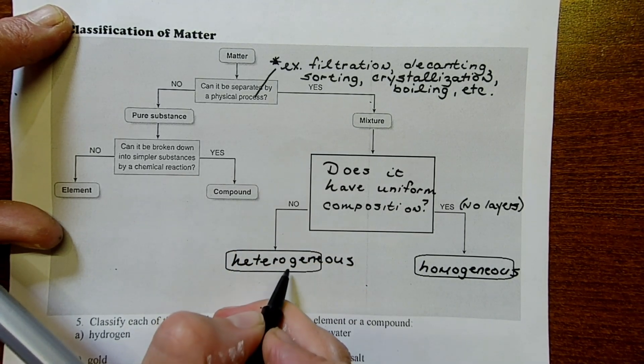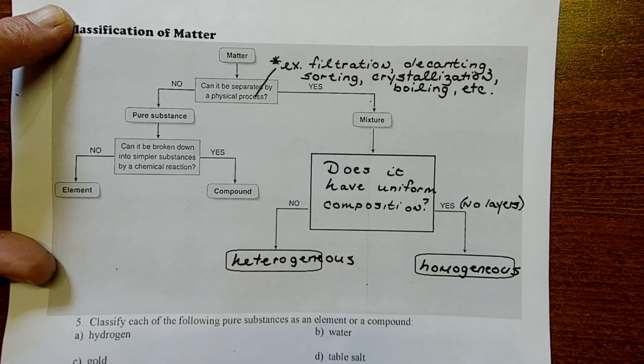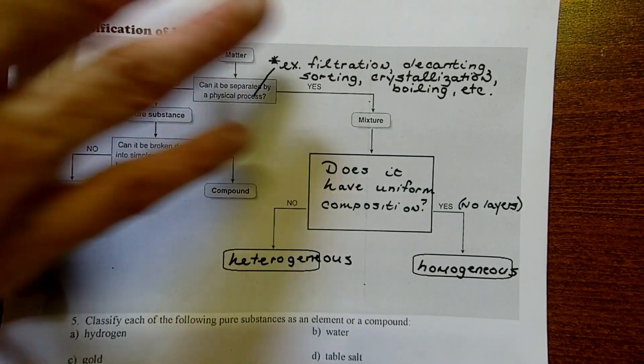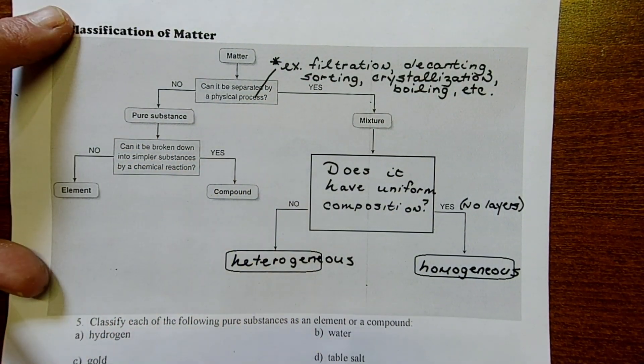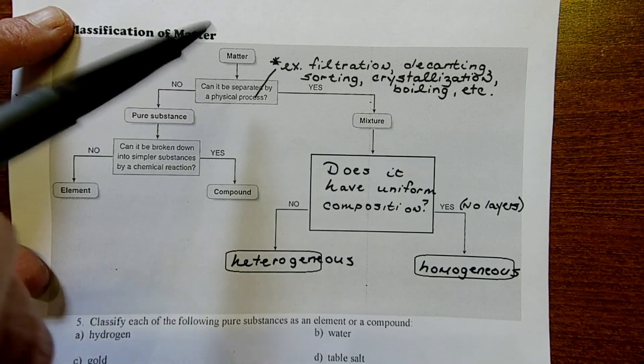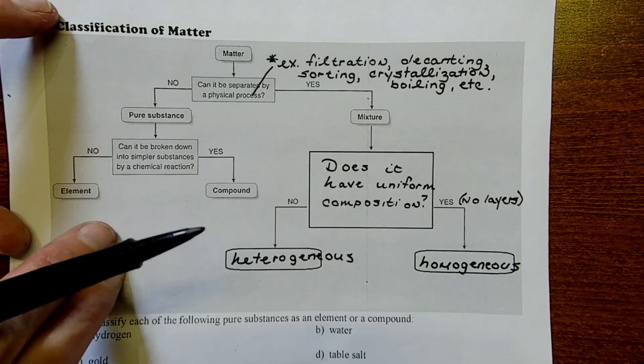Sorry, my handwriting is kind of bad there, so H-E-T-E-R-O-G-E-N-E-O-U-S. These things are on the side of mixtures. We can go in the opposite direction, so if we can't separate something by a physical process, then we're looking at a pure substance.